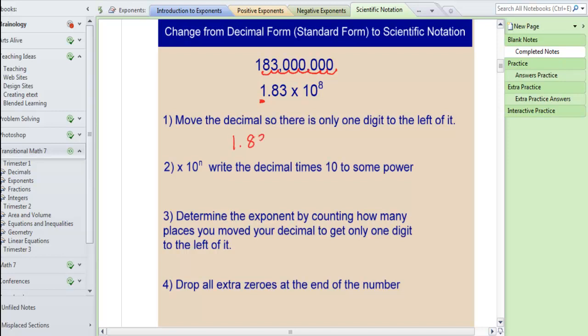So once I have done that I want to write down this number 1.83 or 1 and 83 hundredths times 10 to some exponent. Now I need to figure out what that exponent is. The way we know what the exponent is is by how many places we move the decimal.